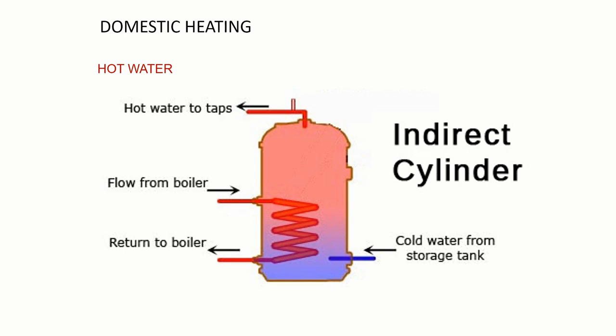It then moves into the hot water cylinder and heats the water by means of an indirect loop before returning back round to the boiler to be reheated again. The way that most indirect cylinders work is they're not heating the water that you would get out of the tap directly. There's a cylinder which is fed with cold water and there's a loop of pipe work within that that the water from the boiler flows round and exchanges the heat into the hot water in the cylinder.